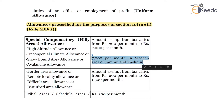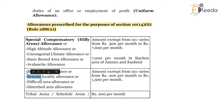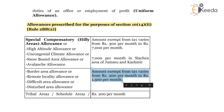The second category is border area allowance, remote area allowance, remote locality allowance, difficult area allowance, and disturbed area allowance. The amount exempt from tax varies from rupees 200 per month to rupees 1,300 per month. There will be a range mentioned under rule 2BB for these various types of allowances. So in the first category, hilly area allowances range from 300 to 7,000 per month, and border/difficult area allowances range from 200 to 1,300 per month.